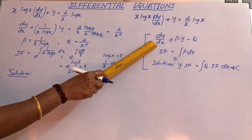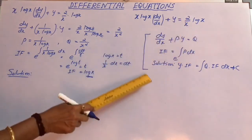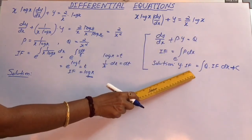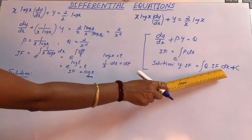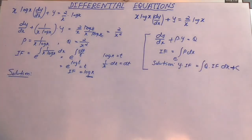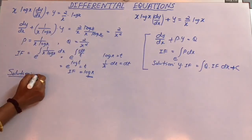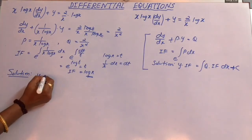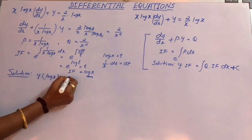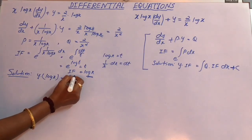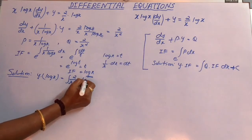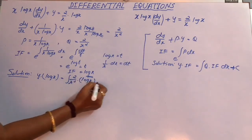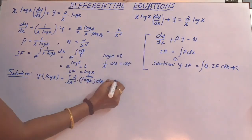The solution to dy/dx + Py = Q is y·(integrating factor) = ∫Q·(integrating factor) dx + C. So the solution becomes y·log(x) = ∫(2/x²)·log(x) dx + C.